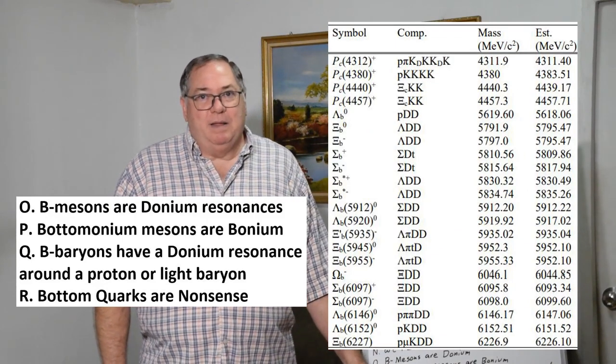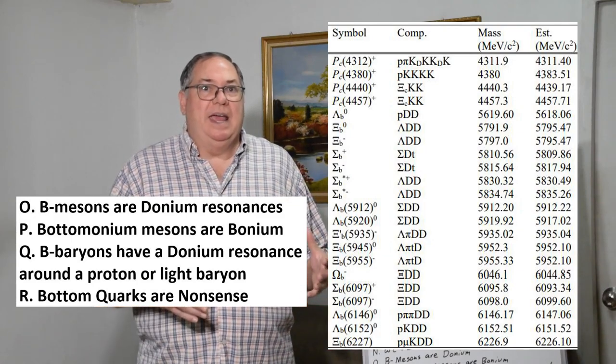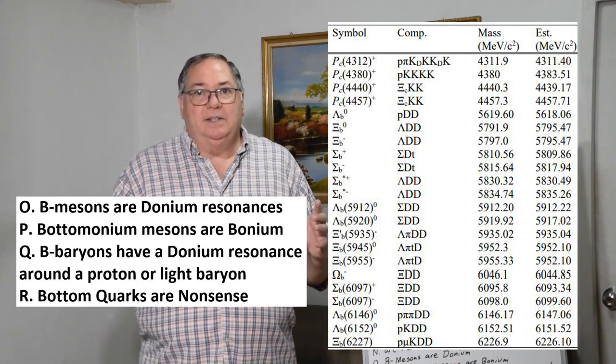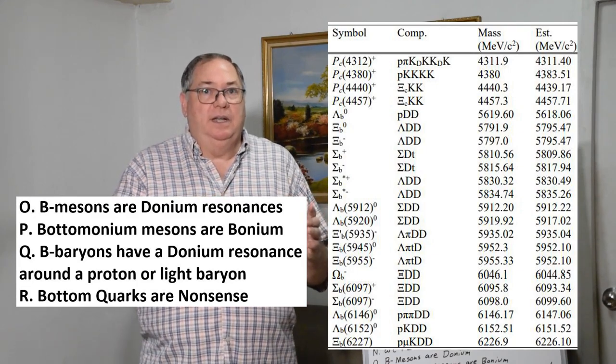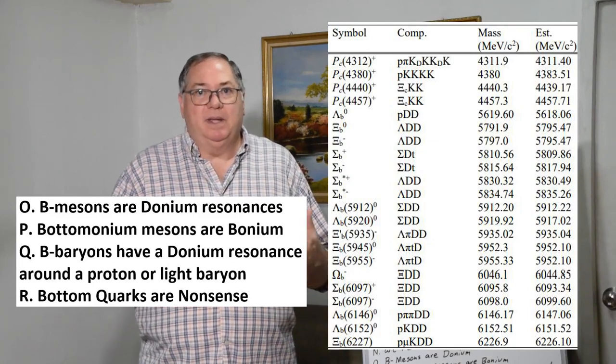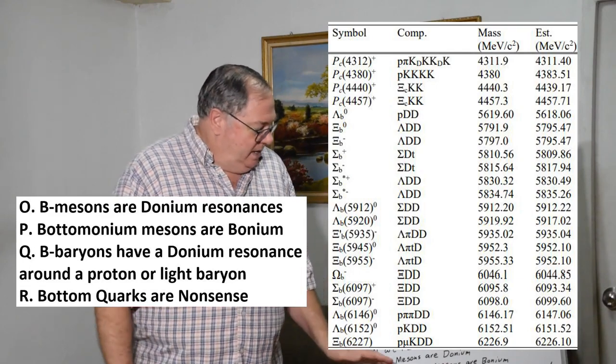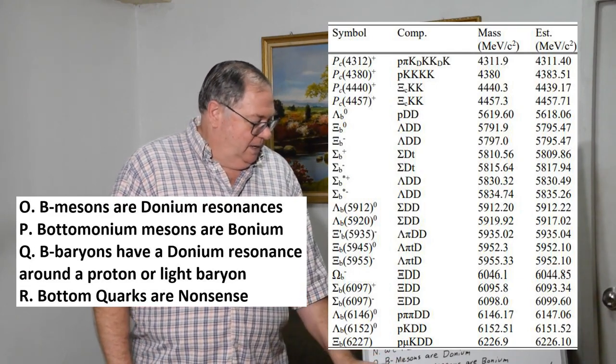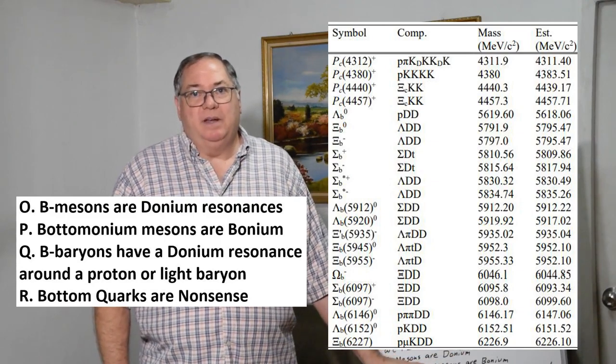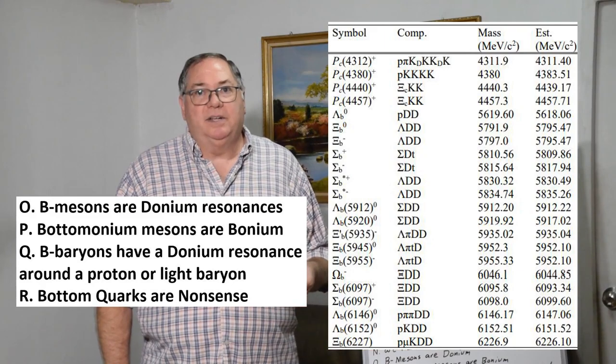The bottom baryons can be estimated the same way, except they have two D mesons in orbit or four kaons in orbit around a proton or a lighter baryon like the sigma, chi, omega. So you end up with all the bottom baryons falling out of the onium theory in a very simple way. Once again, very high accuracy estimates.